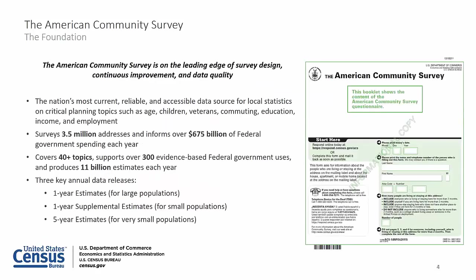The ACS is the nation's most current, reliable, and accessible data source for local statistics on critical planning topics such as age, children, veterans, commuting, education, income, and employment. It samples approximately 3.5 million addresses collected continuously throughout the year to produce annual social, economic, housing, and demographic estimates. It helps distribute more than $675 billion of federal government spending each year, covers more than 40 topics, supports more than 300 known federal uses, and businesses and communities use these 11 billion estimates each year to make vital decisions including where to locate hospitals and schools, what transportation needs exist, and what services businesses should provide.